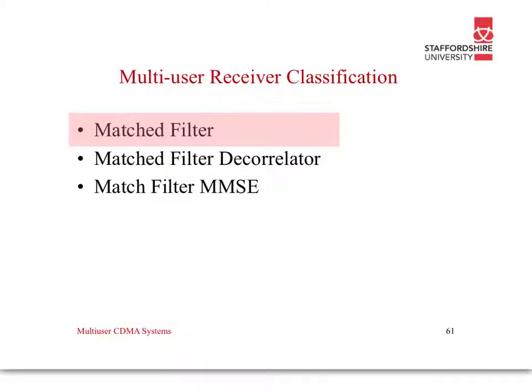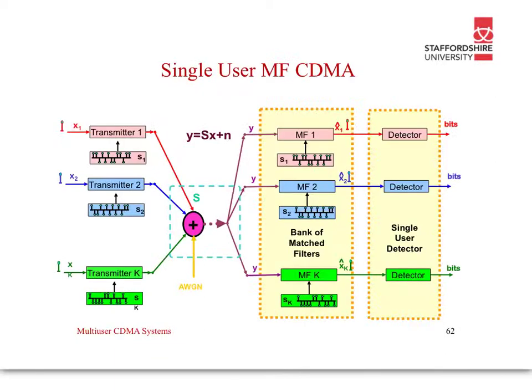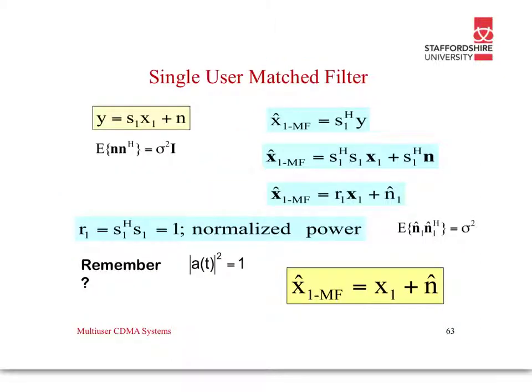The three multi-user classifications that we have. First of all, we'll look at the simplest, which is the matched filter. In the matched filter, what we have is we have a bank of matched filters at the receiver side, and we detect which was it a 1 or was it a 0, or was it a 1 or was it a minus 1 that was transmitted.